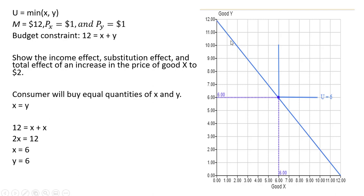I've graphed our solution here. We have this budget constraint with a vertical intercept of 12 and a horizontal intercept of 12. We have our utility maximizing condition where the budget constraint is just tangent to this L-shaped perfect complements indifference curve. When the consumer is consuming 6 units of x and 6 units of y, the consumer is getting utility of 6.